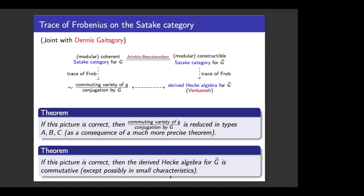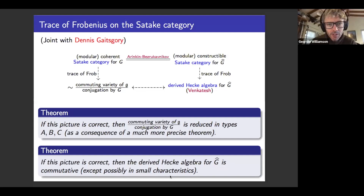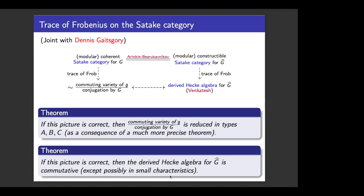Could you say two more words about the Bezrukavnikov equivalence? Is the Satake category of coherent sheaves on the left? Yes — in particular, you want to take the derived category. On the right you would take the equivariant derived category of, say, G(O). And on the left it's the thing that corresponds to it — some version of a Lie algebra or a group module — except the twist is that we need to take modular coefficients to make something interesting in this case.